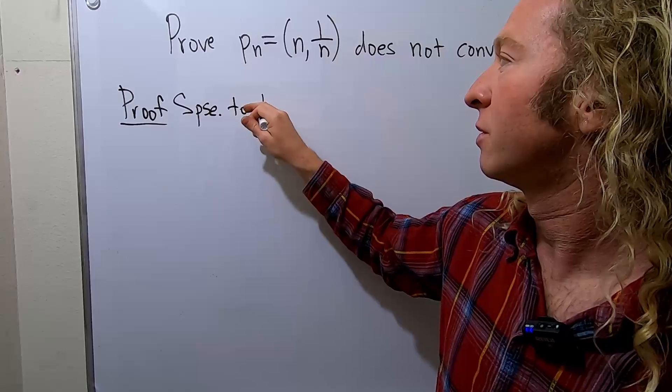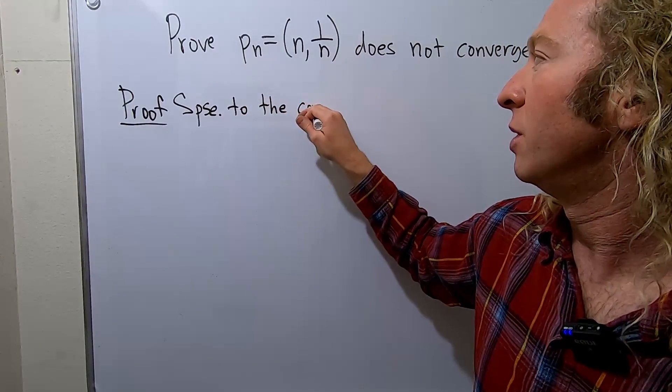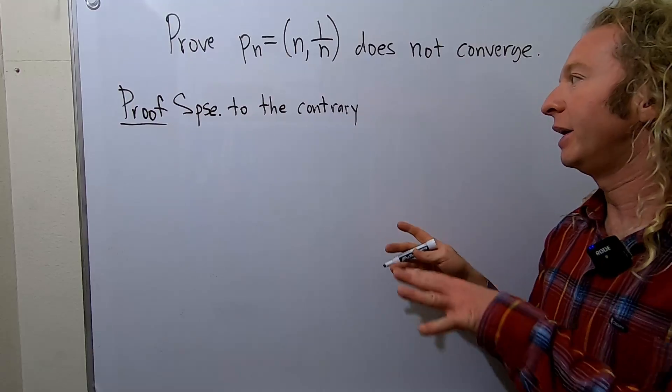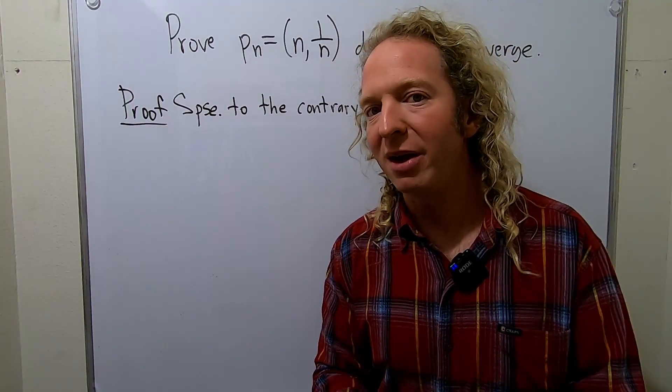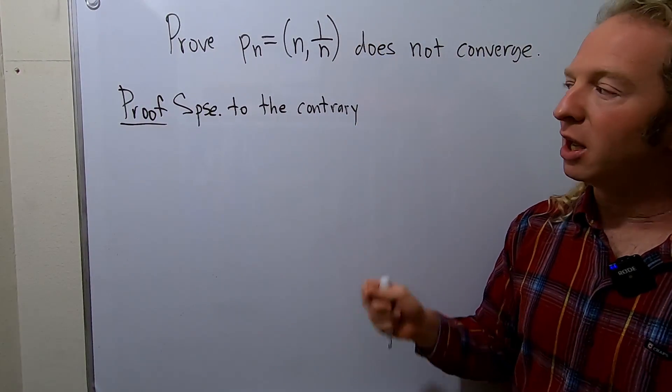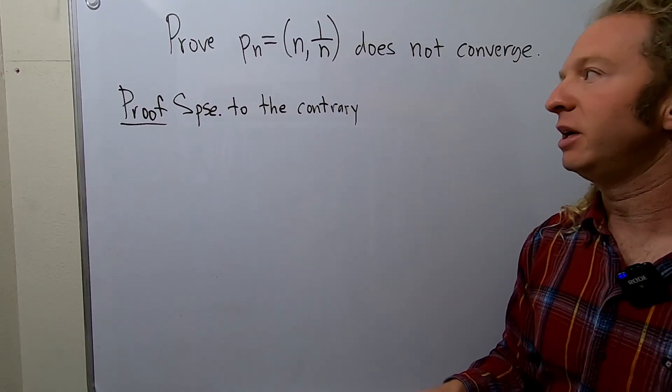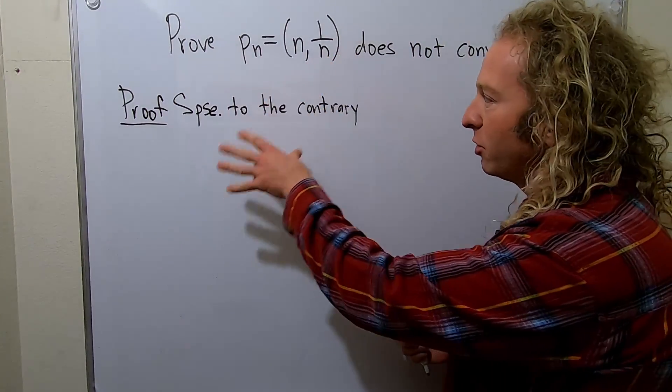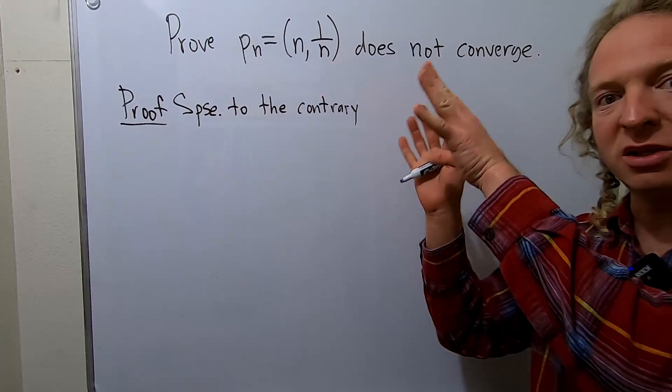to the contrary. It's really good to use language like this in proofs because it lets the reader know that you're starting a proof by contradiction. It's all about clarity and simplicity in mathematics. That's what makes it beautiful. So suppose, to the contrary, that the sequence does converge.